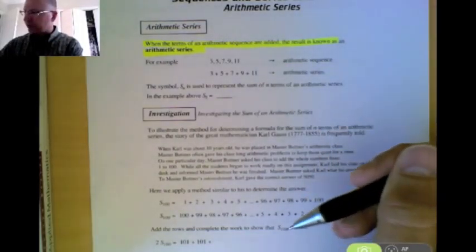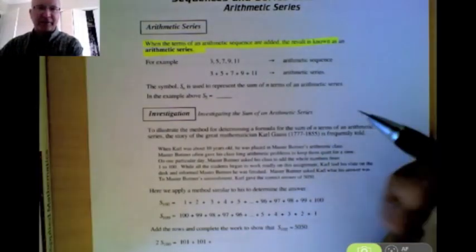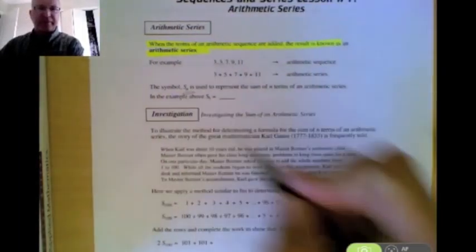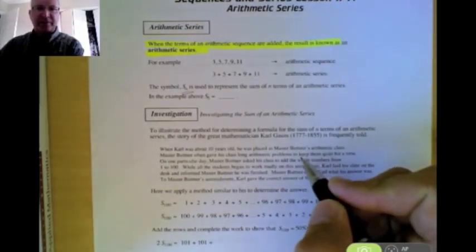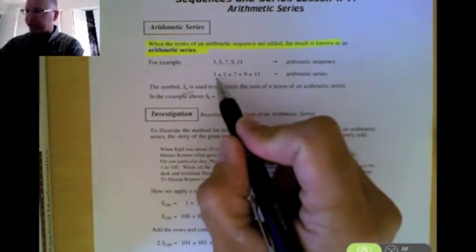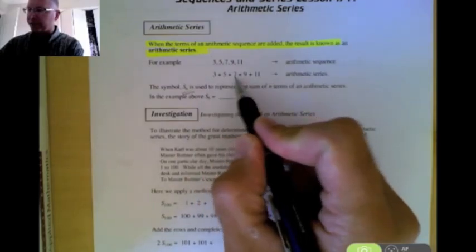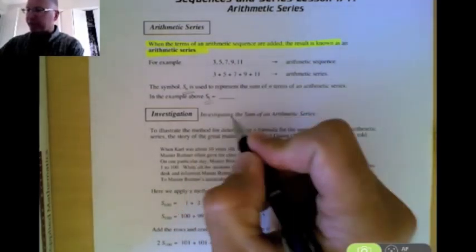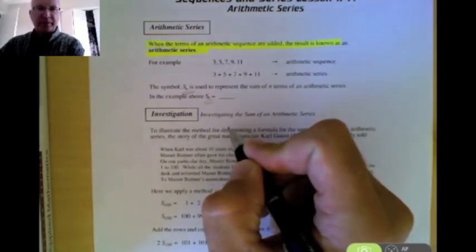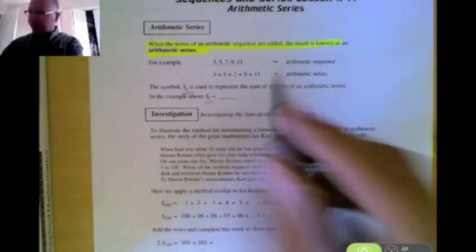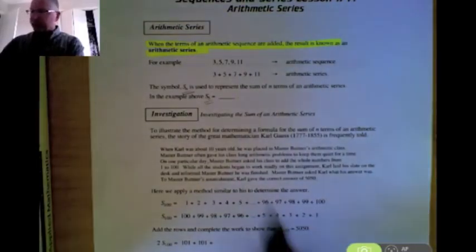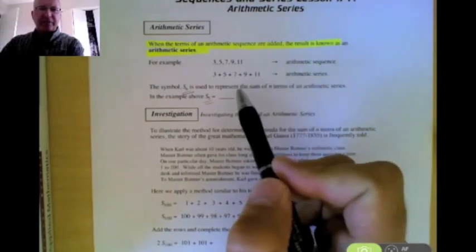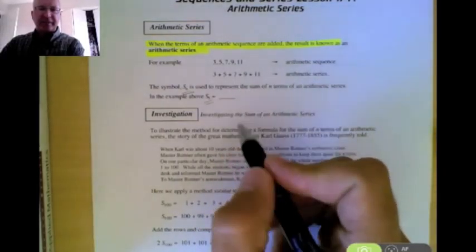And since we're talking about adding or finding the sum, we're going to use the symbol S_N to represent that we're finding the sum. So in this particular series up here we have one, two, three, four, five terms. So we want to find the sum of those five terms. So we write that as S_5. Now we could just use our calculator and go three, five, seven, nine, eleven. We could just add those things together and get a total.